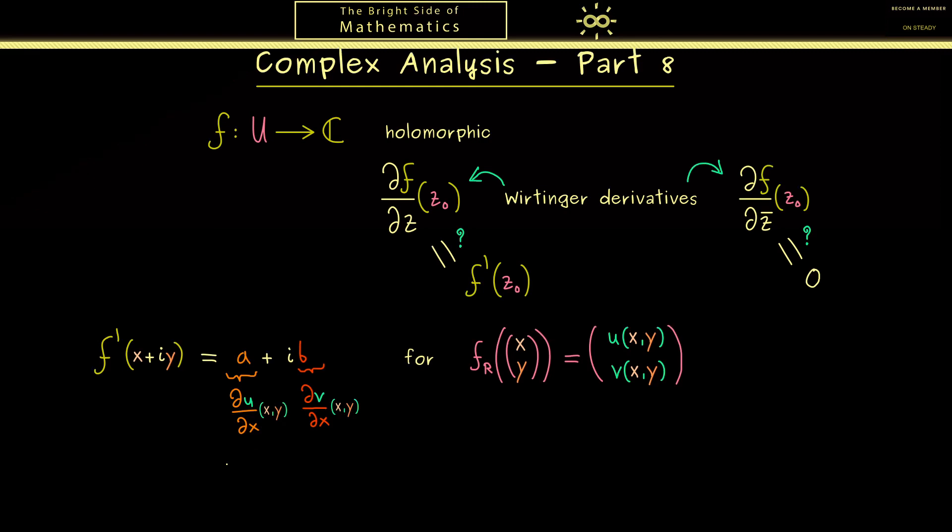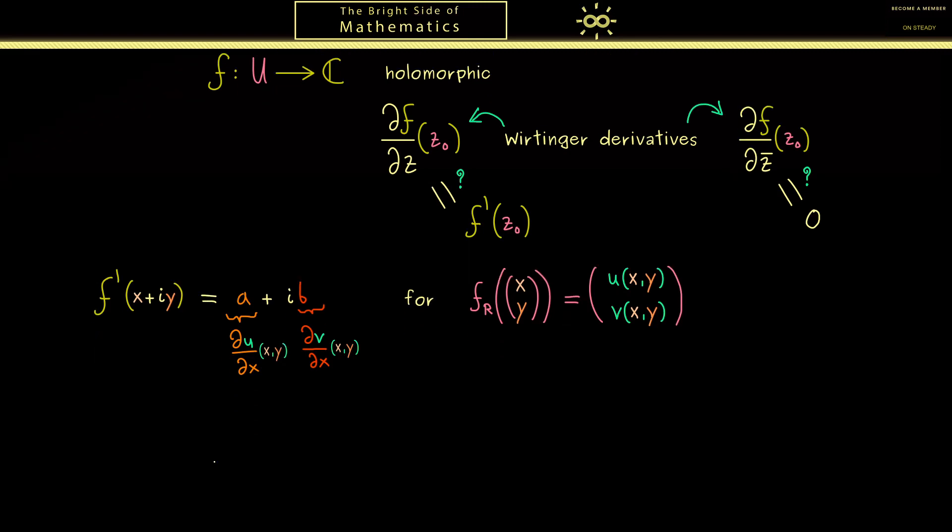Of course now in the next step here we want to use the Cauchy-Riemann equations. And in order to include them correctly, the best thing we can do is to double this complex number here. So you see we add the same number again but then we have to divide everything by 2. And now the idea is that here in the second part we apply the Cauchy-Riemann equations. So instead of du/dx we can write dv/dy. And on the other hand dv/dx can be written as minus du/dy.